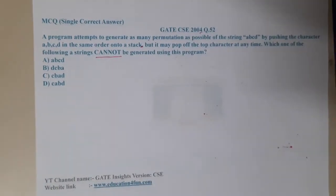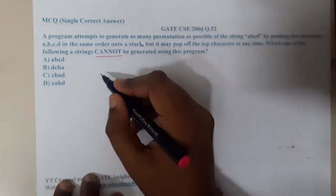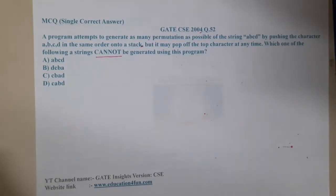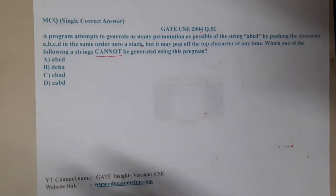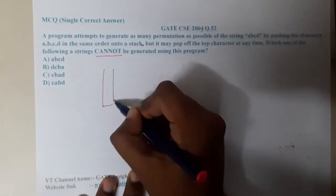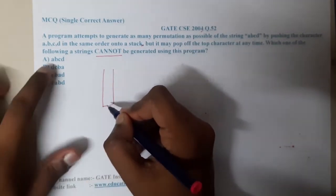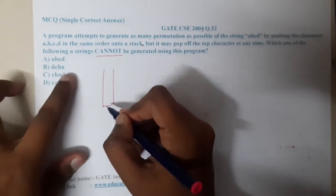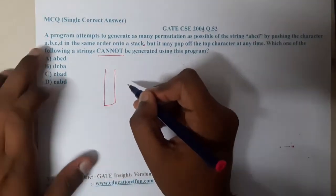So which pop sequence cannot be generated — that's what they are asking. Please pause the video and try it once, since this is a previously seen type of question, you should be able to solve it. This is based on stack only. We are trying to find which order is not possible, pushing in a, b, c, d order.